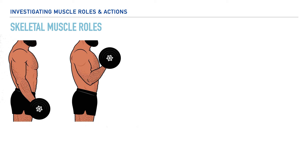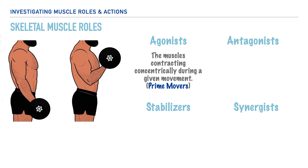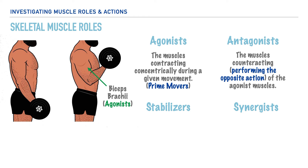Let's list the primary roles muscles serve during movement. They can serve as agonists, antagonists, stabilizers, and synergists. When we refer to agonists, we're saying that these are the muscles contracting concentrically during a given movement, and sometimes these are referred to as prime movers. Muscles can also serve as antagonists, counteracting the action of the agonist muscles. For example, in a biceps curl, the agonist is the biceps brachii muscle, and the antagonist is the triceps brachii. When the biceps is shortening during this motion, the triceps is lengthening.